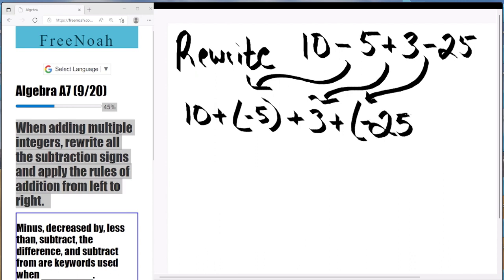So basically, 10 - 5 + 3 - 25. When we rewrite this expression, we ultimately get 10 + (-5) + 3 + (-25).